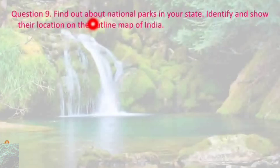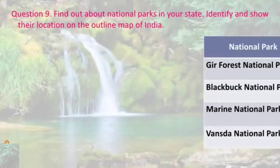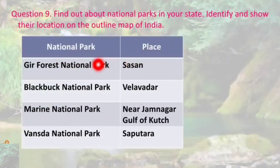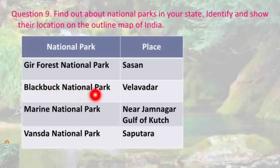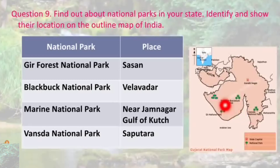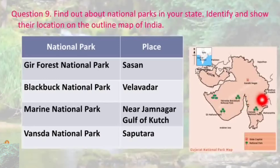Question number 9: find out about national parks in your state. In Gujarat, there are four national parks: Gir Forest National Park located in Sassan; Blackbuck National Park in Velavadar; Marine National Park near Jamnagar in the Gulf of Kachchh; and Vansda National Park located in Saputara. These four national parks are located within Gujarat.